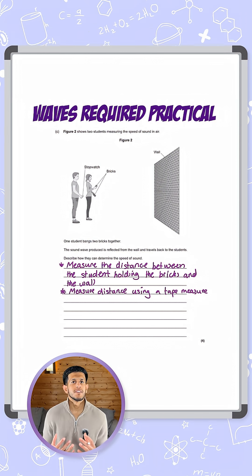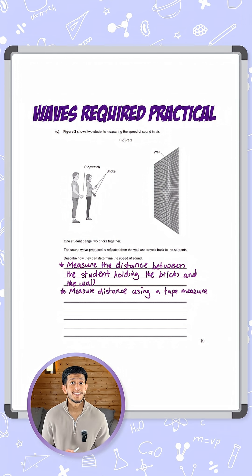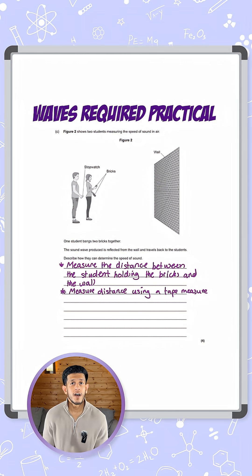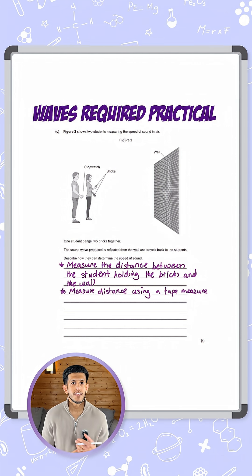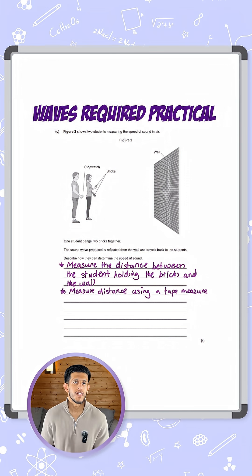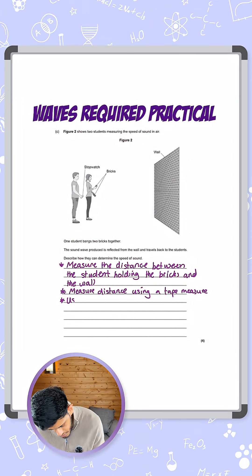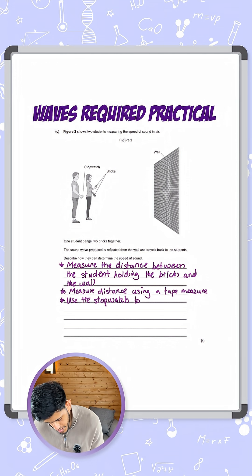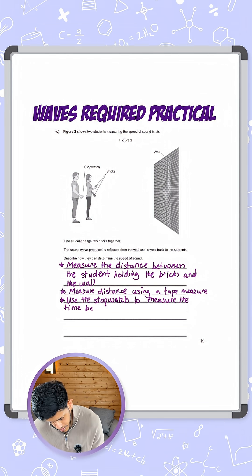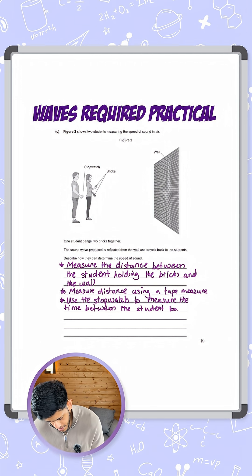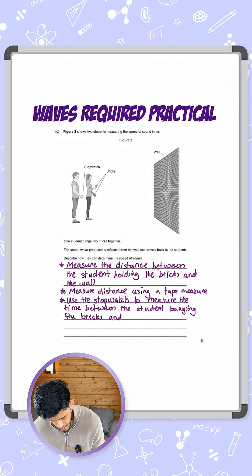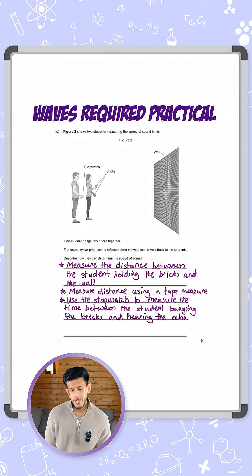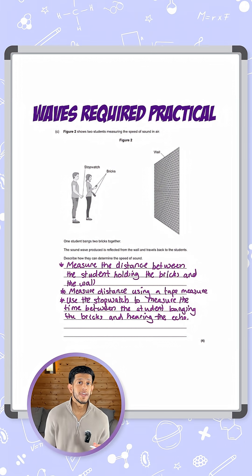Now we need to look at measuring the time. That's why he's holding a stopwatch, you can see in the diagram. We're going to measure the time from when the student bangs the bricks to when the second student hears the echo of that. So I'm going to put here: use the stopwatch to measure the time between the student banging the bricks and hearing the echo. Of course, this is the point where we can get some human error involved.